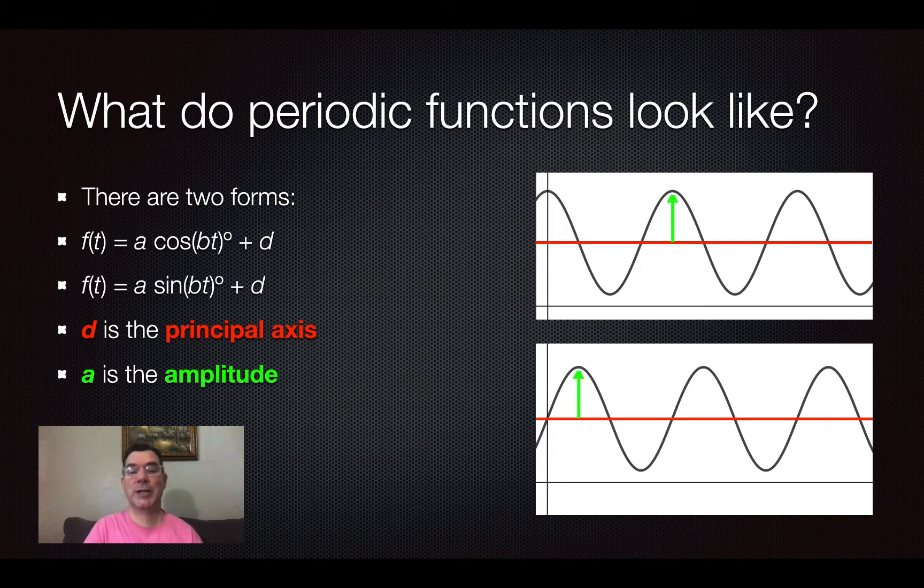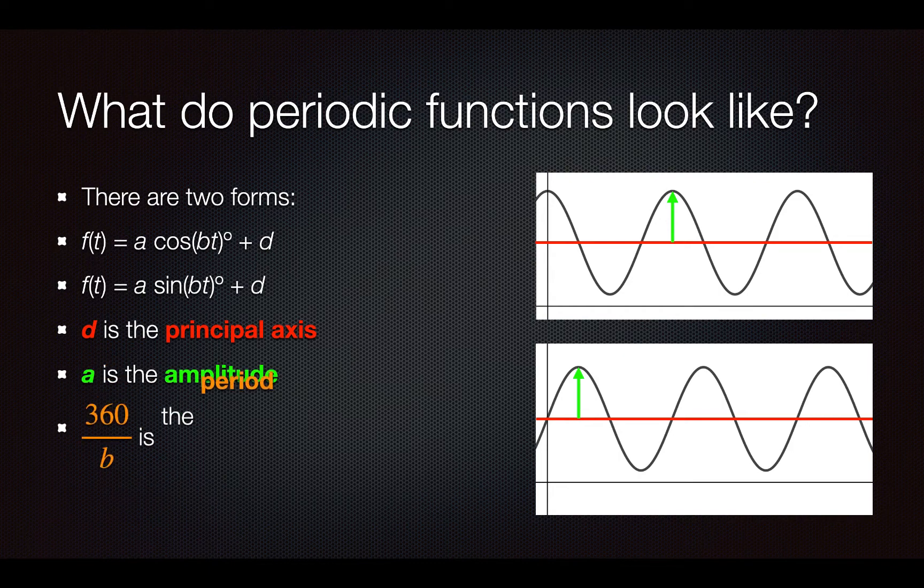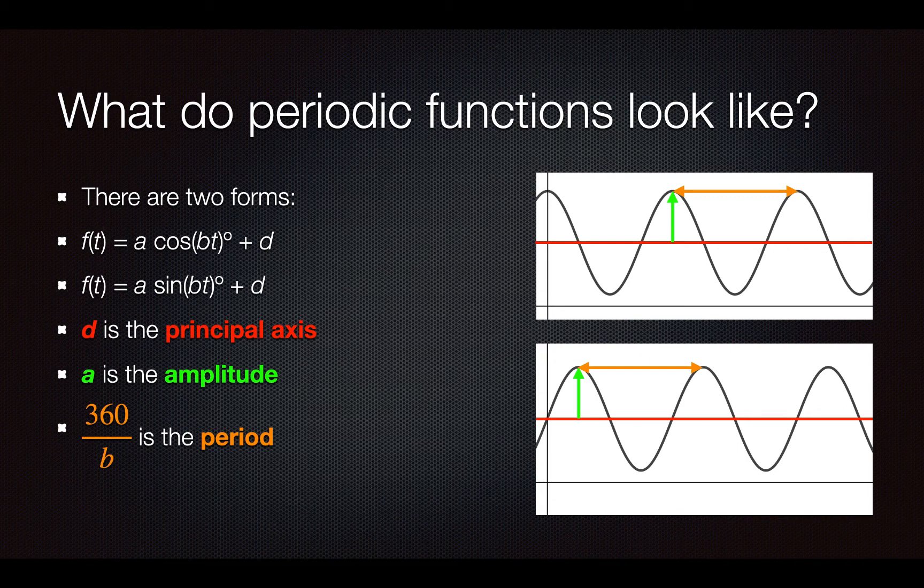A is going to represent the amplitude and what that is is the vertical distance from the principal axis to the highest point on the graph. And then if we want to find the b-value,